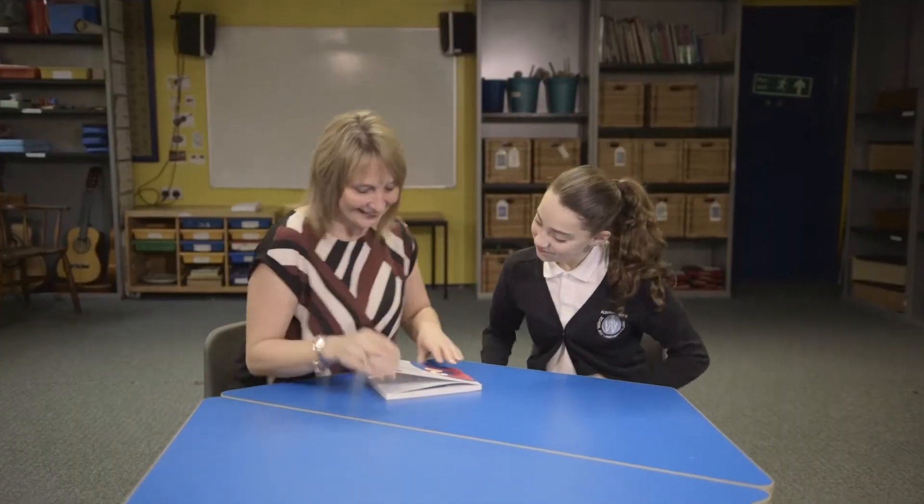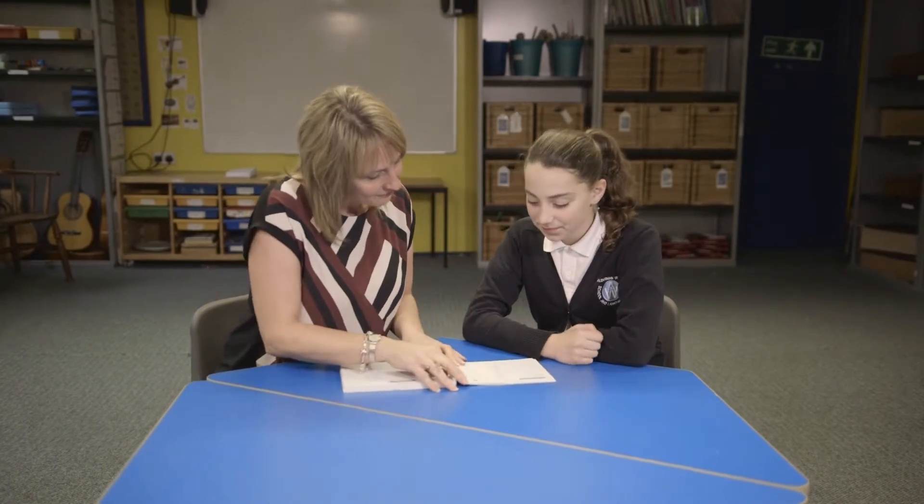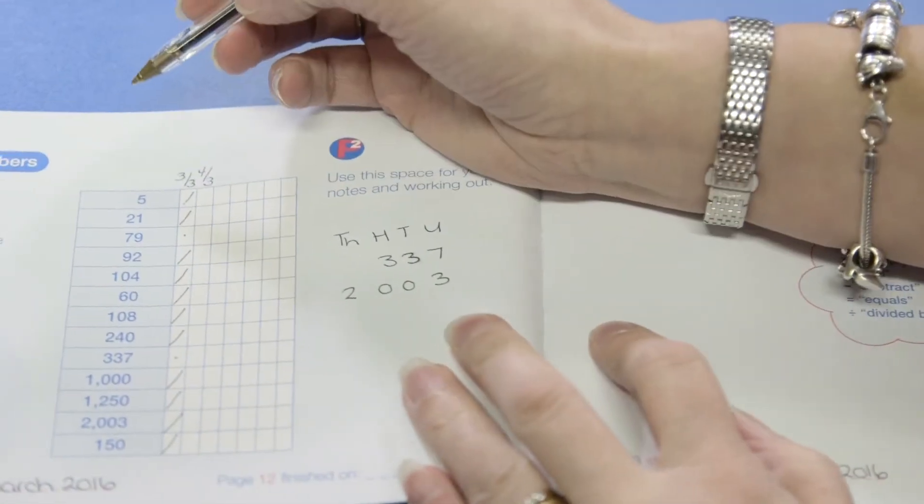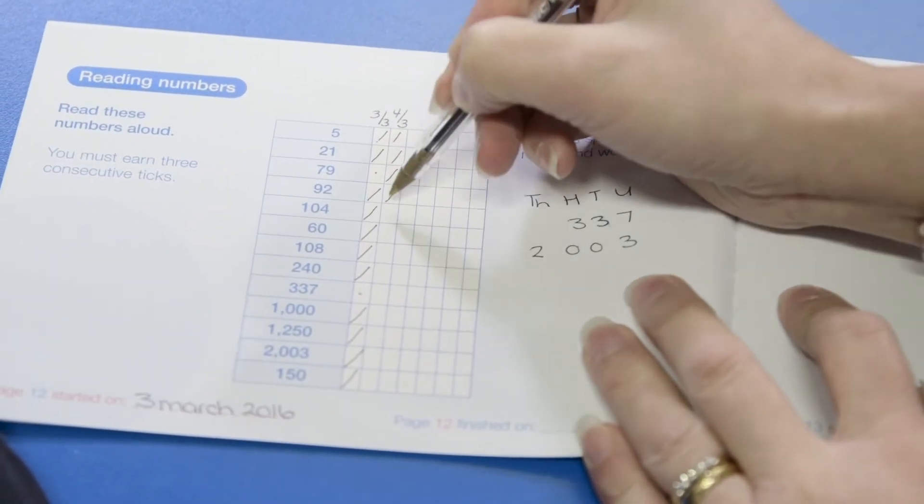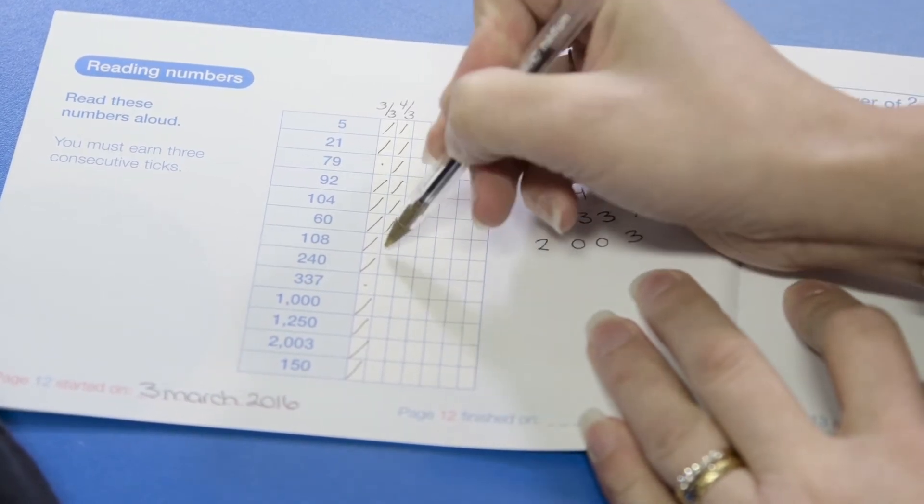The next time you use the book, start at the first question that hasn't got three consecutive ticks. Put the date at the top of the next column and again continue working through the pages until your time is up. As before, just doing one column per page. Repeat this each time you visit the book.